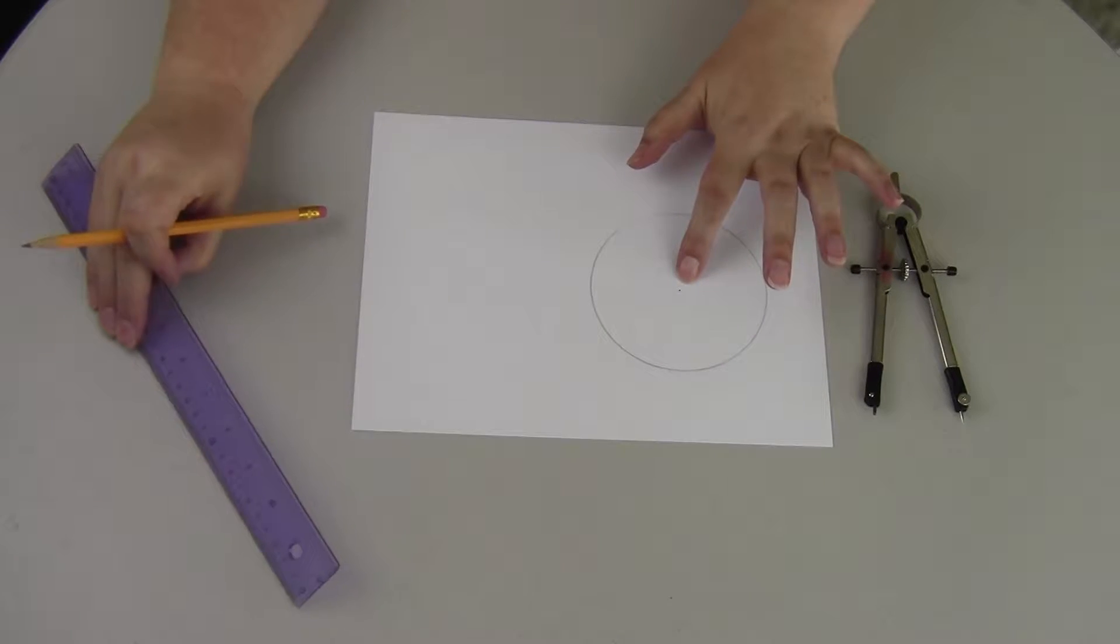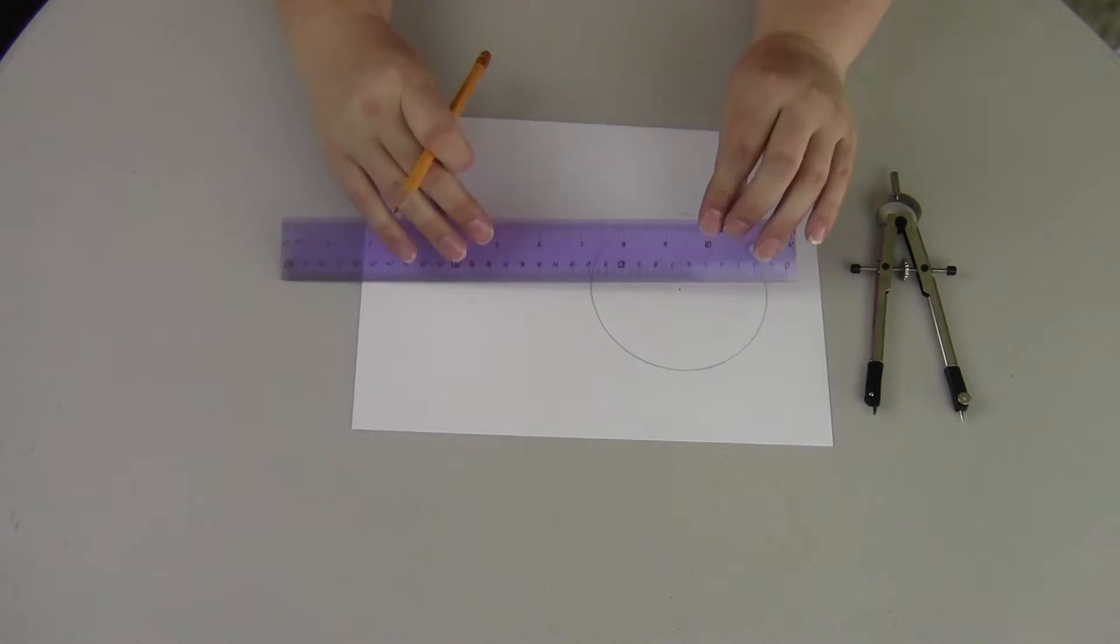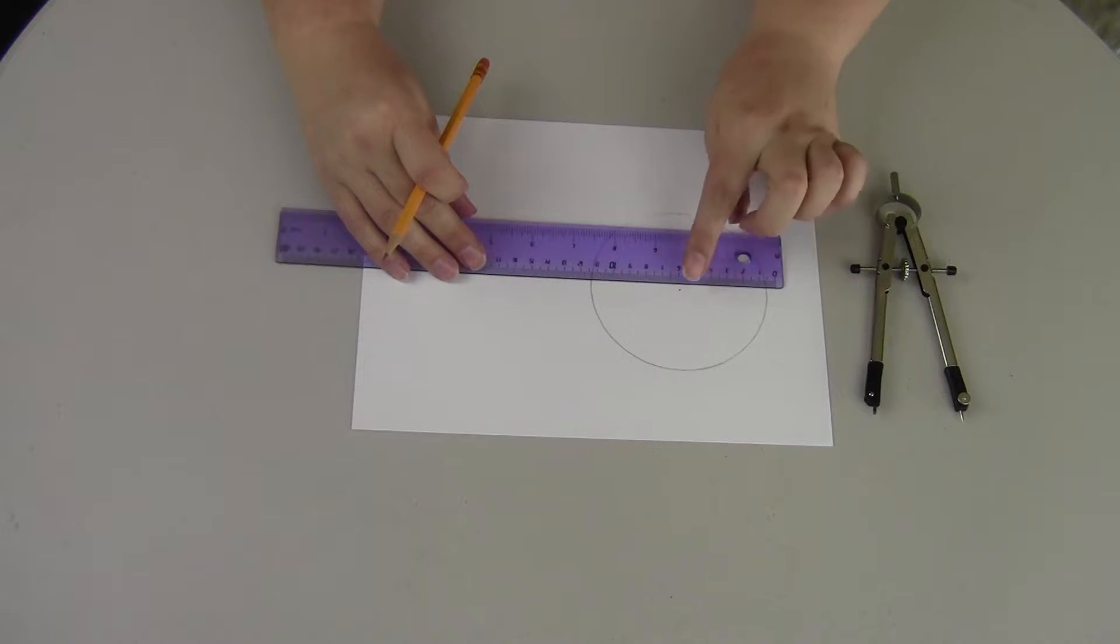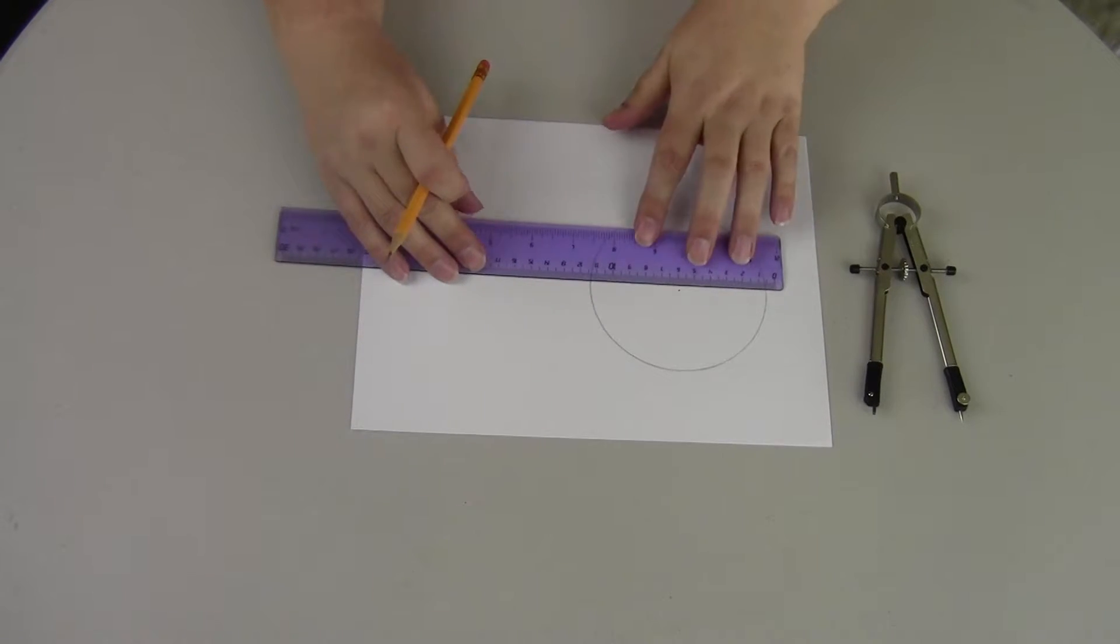You have completed your circle with the point in the center, and now we're going to draw a line from the center of the circle to the outside, the circumference of the circle.